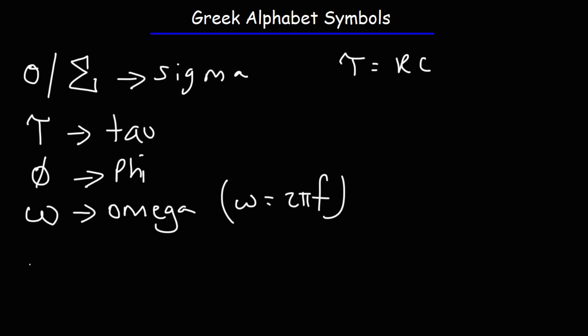Another unit or symbol of omega is this one. This is the uppercase version of omega. And you'll see this symbol when dealing with electrical circuits. So this symbol is the unit of resistance which is measured in ohms.